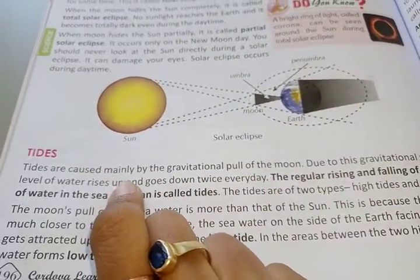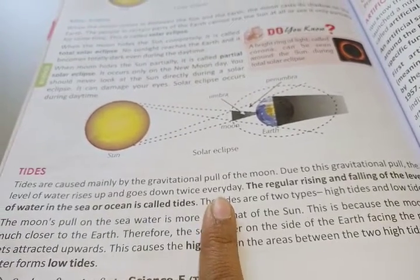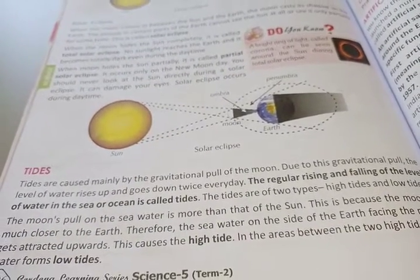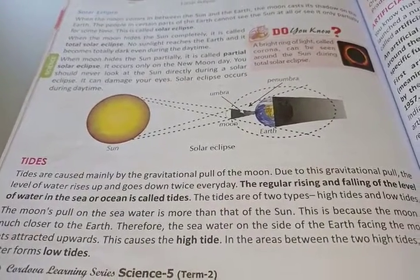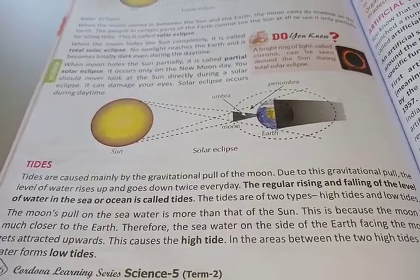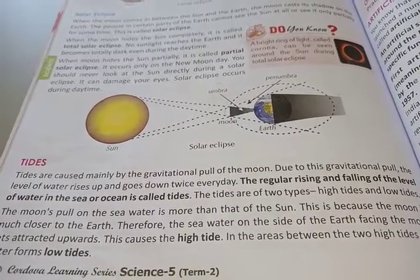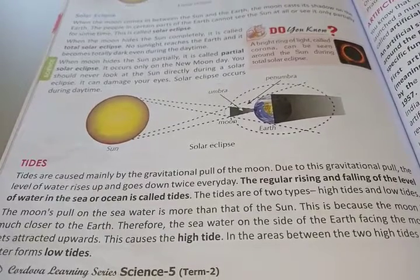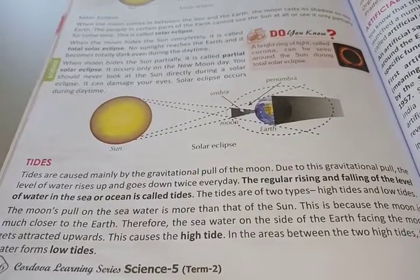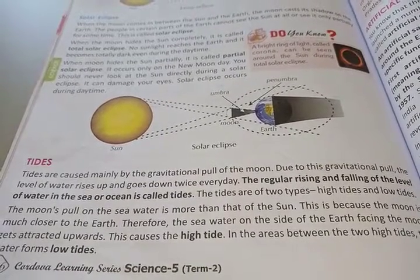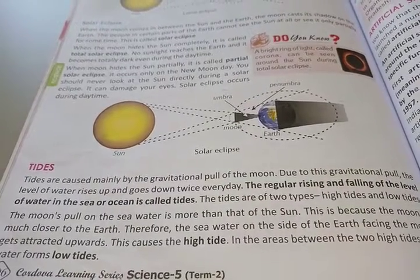Tides are caused mainly by the gravitational pull of the Moon. Due to this gravitational pull, the level of water rises up and goes down twice a day. The regular rising and falling of the level of water in the sea or ocean is called a tide. Tides are of two types: high tides and low tides.